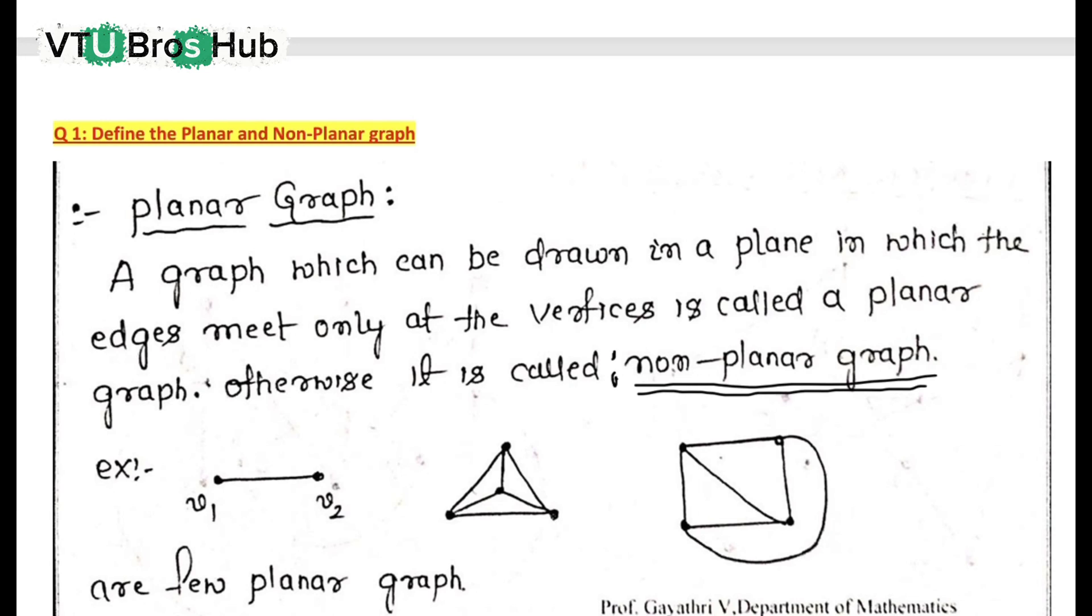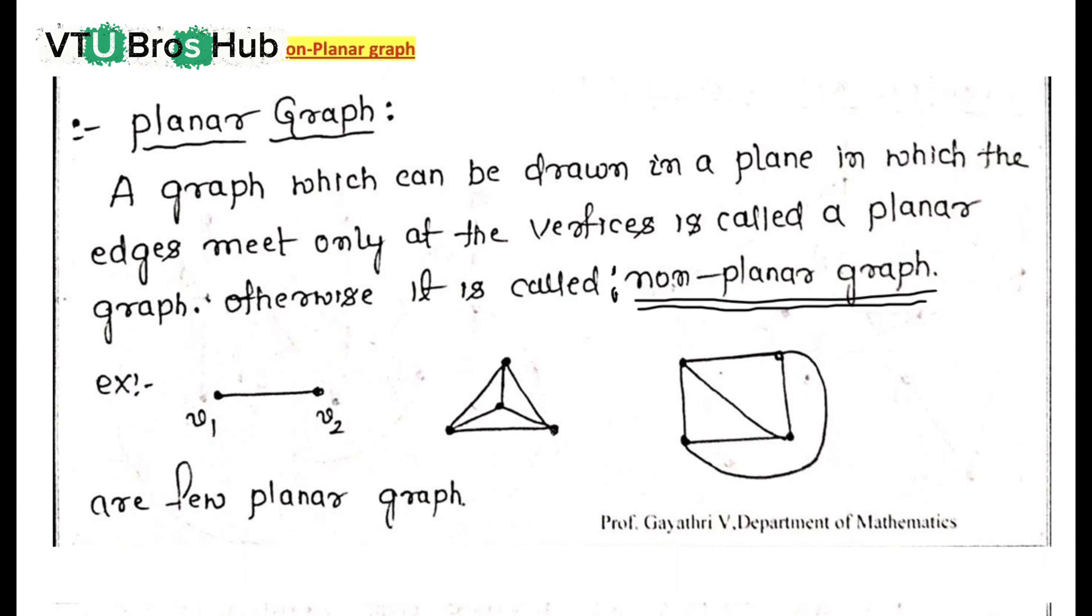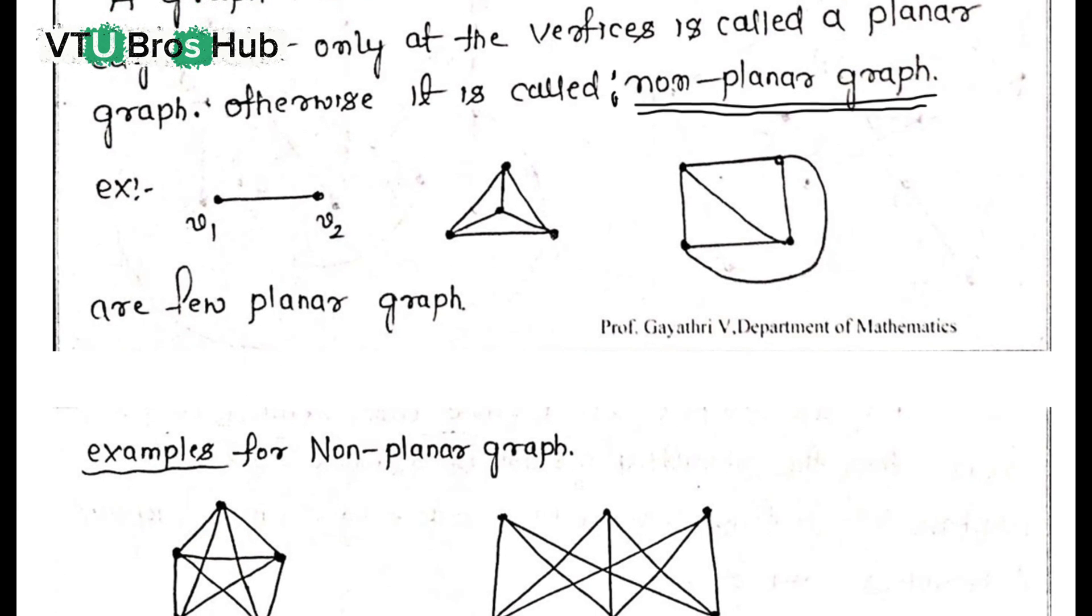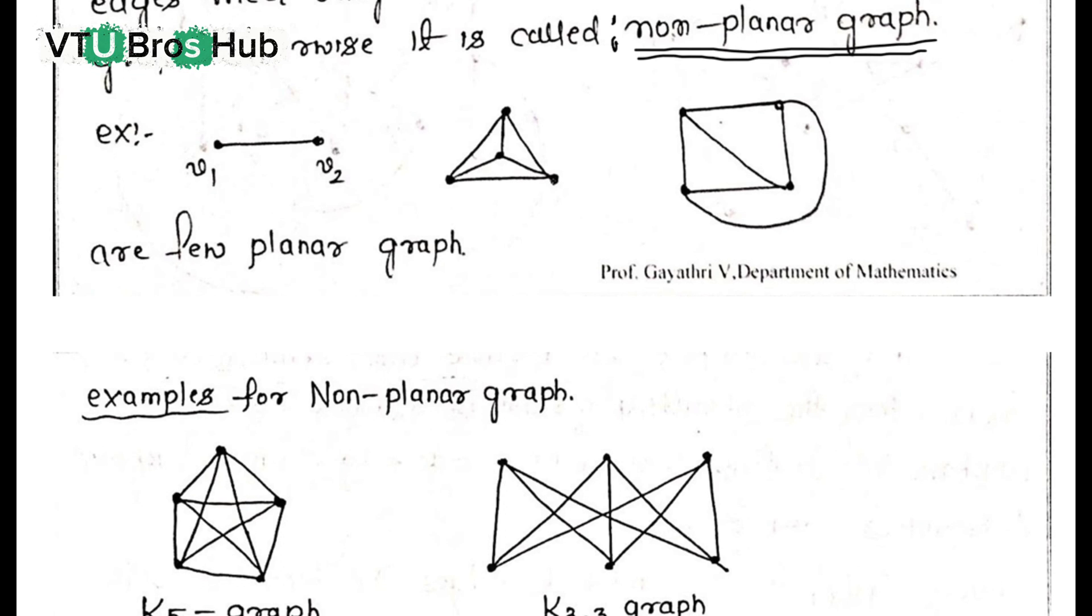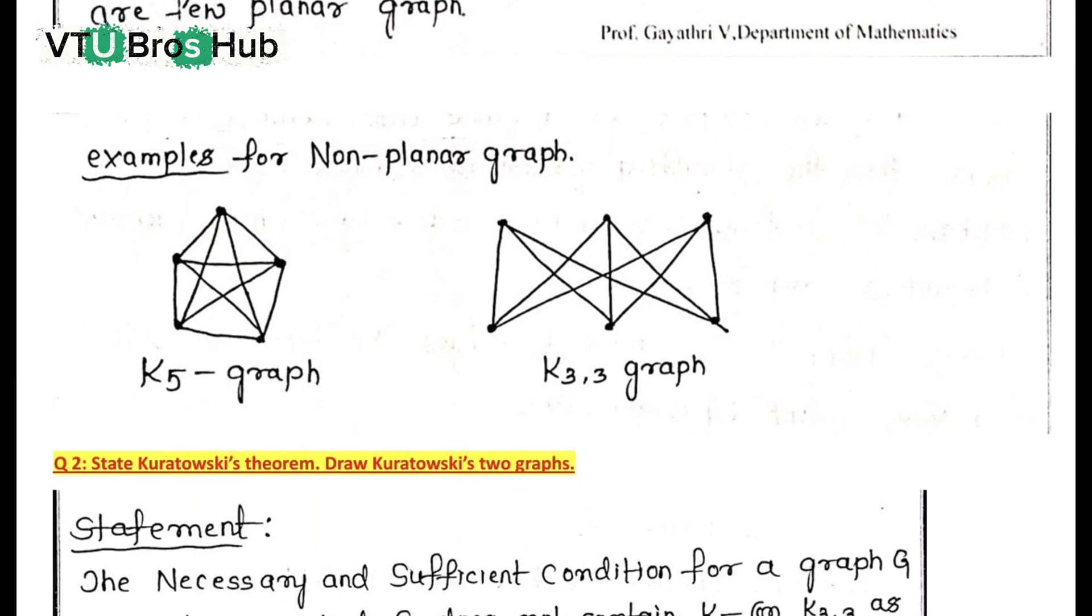Question 1: Planar and non-planar graphs. What is a planar graph? It is a graph that can be drawn without any edge crossings. A non-planar graph cannot be drawn that way. Now refer to the shown diagram for a clear example.